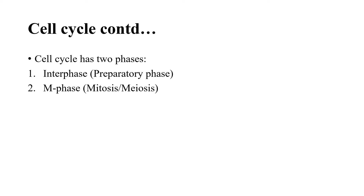In the M phase, mitosis occurs in somatic cells — cells like skin and gut cells that make up the whole body. These somatic cells multiply through mitosis.